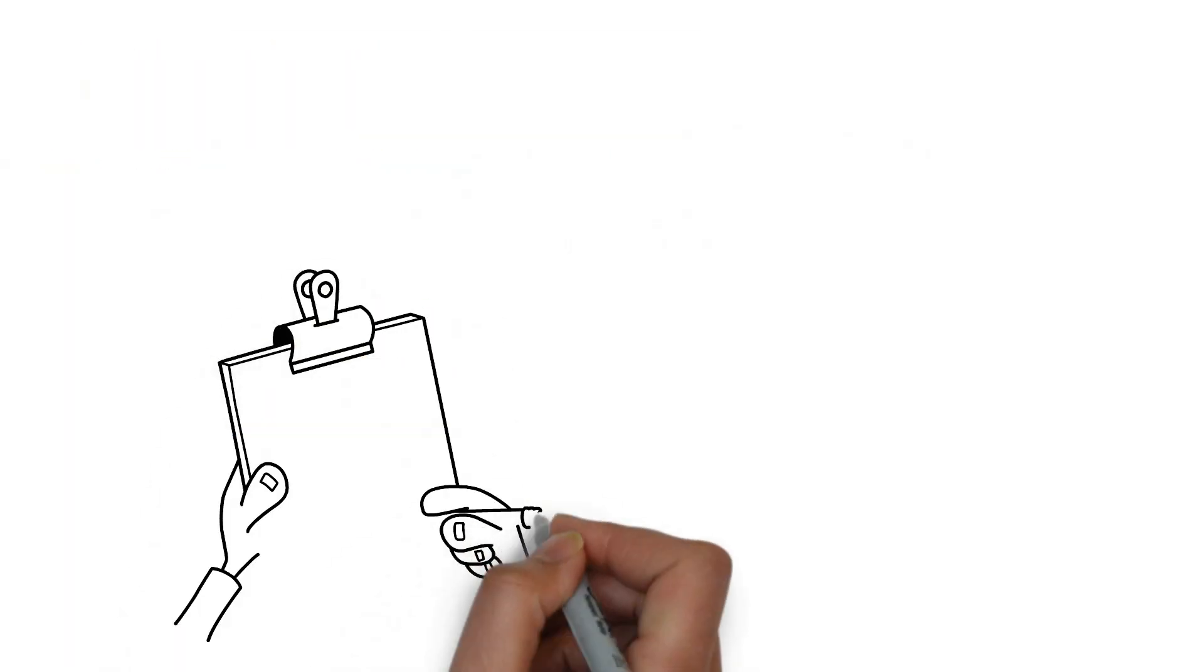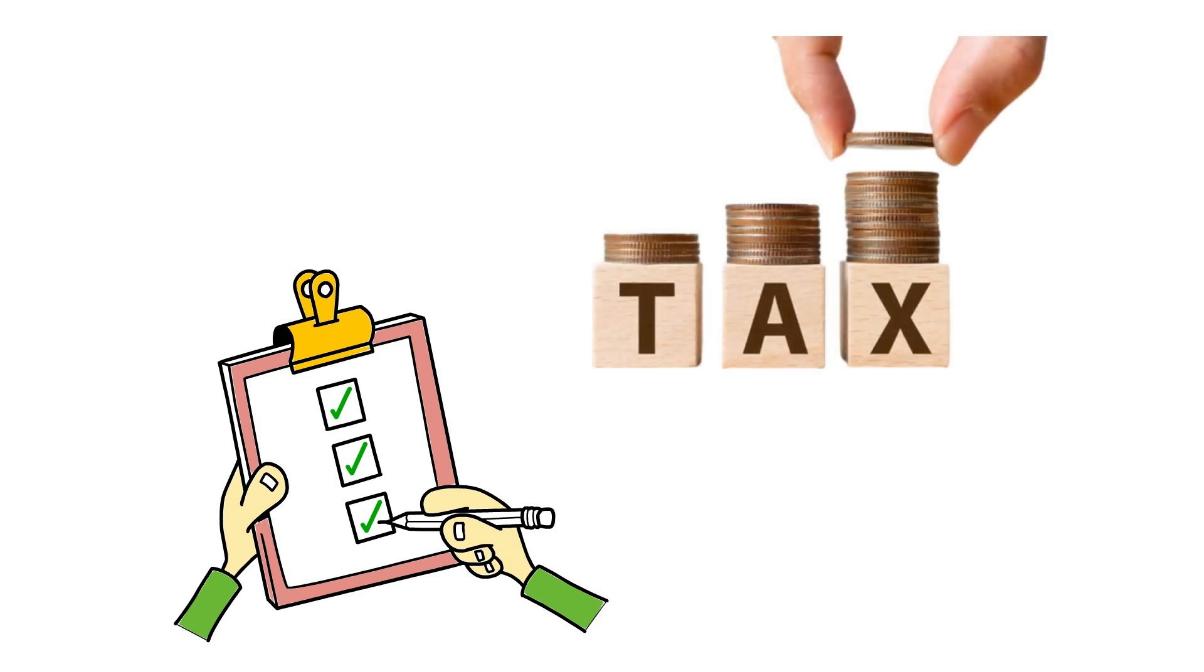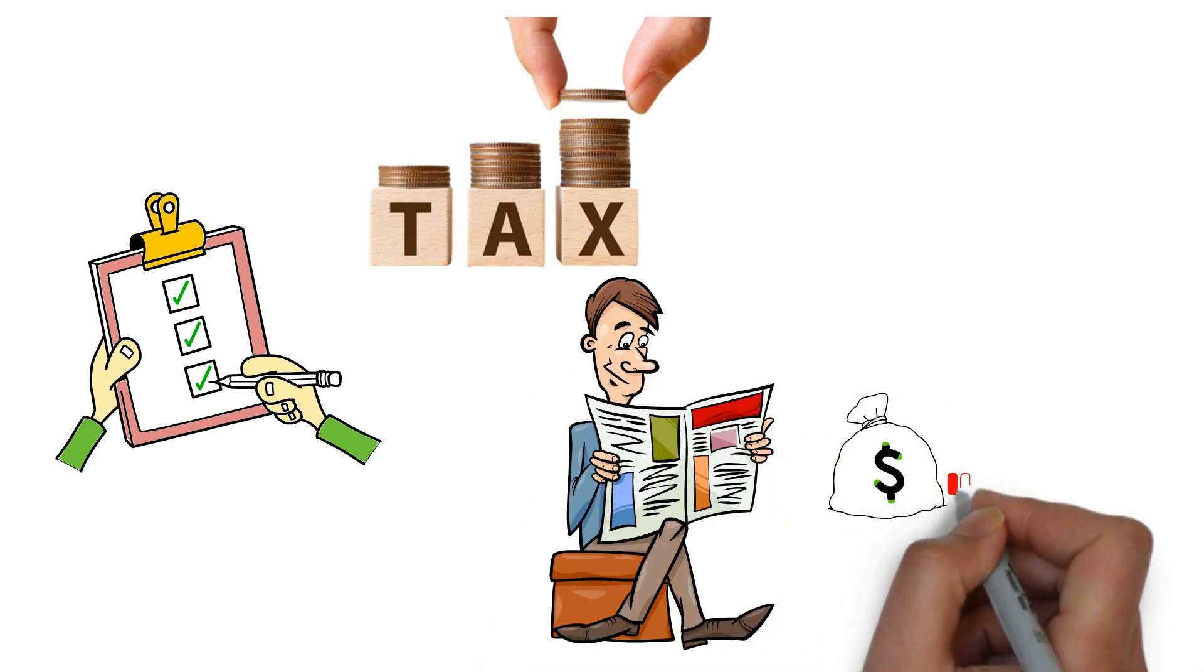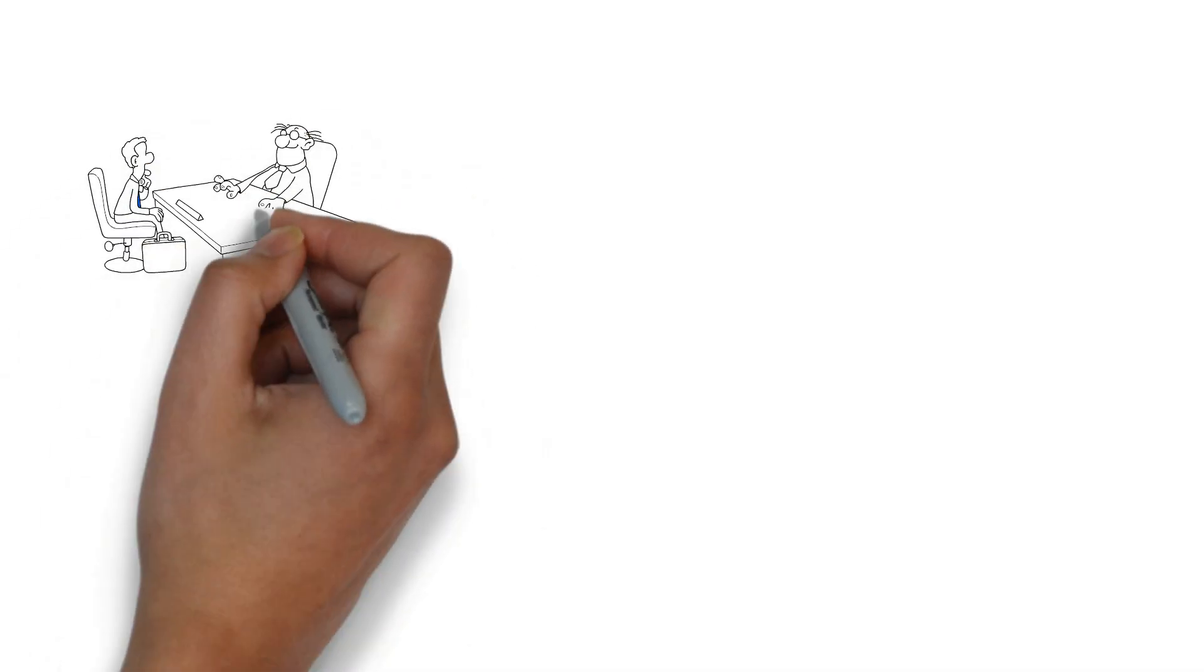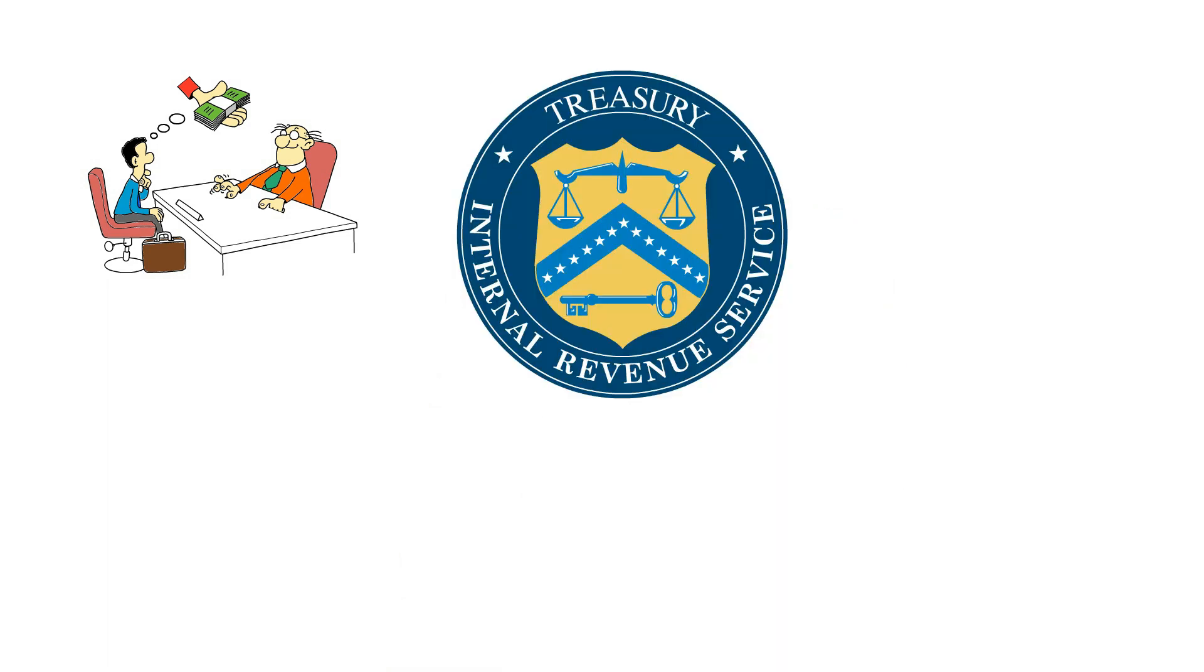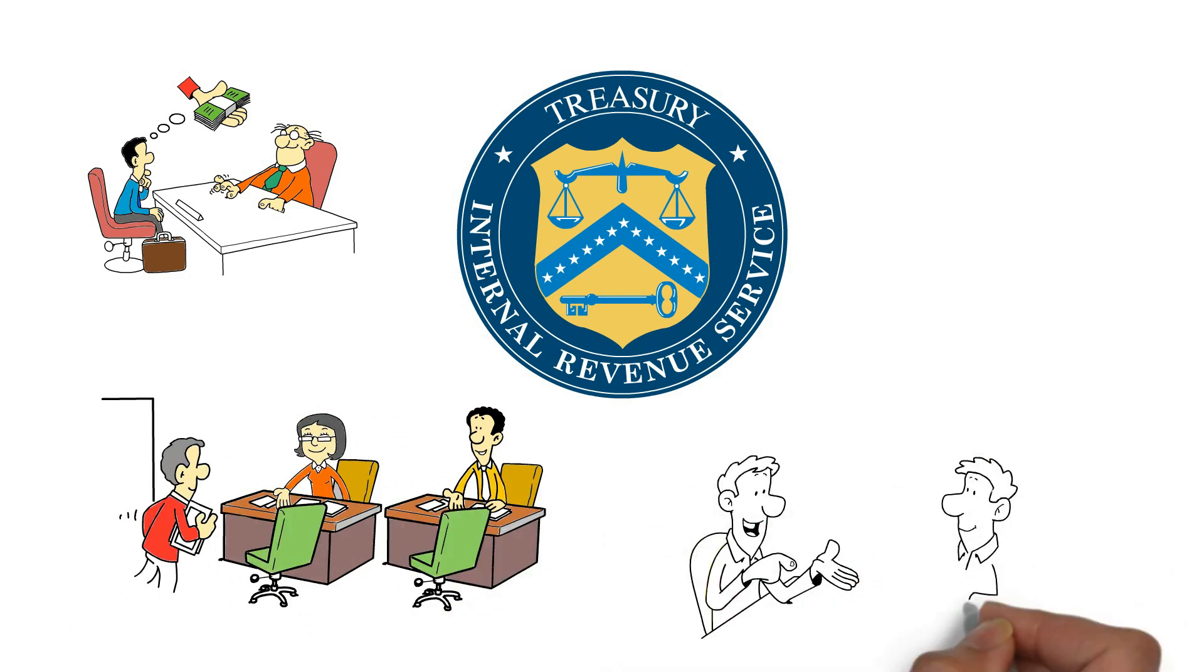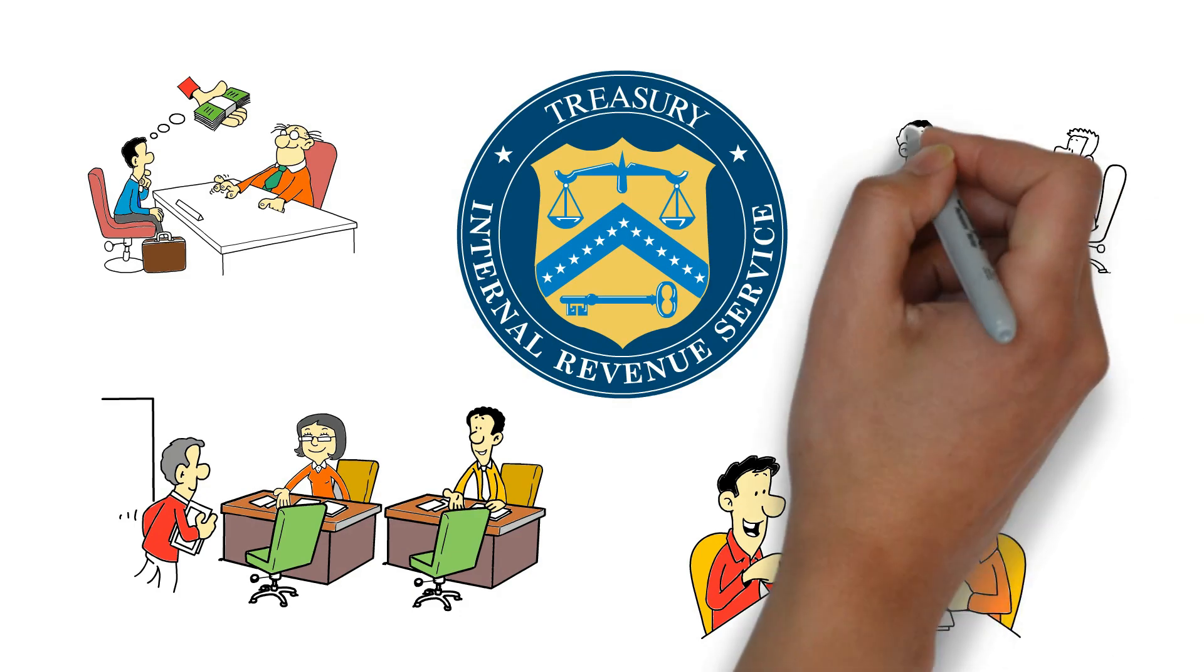Another strategy is to itemize your deduction when filing your taxes. This itemization can lead to significant savings on your overall tax bill. Furthermore, exploring available tax credits can also help reduce the amount of taxes you owe. When you find it challenging to pay your taxes in full, it may be worth considering negotiating a payment plan with the Internal Revenue Service, IRS. Engaging in open communication and demonstrating a genuine commitment to resolving your tax obligations can lead to a mutually acceptable plan.